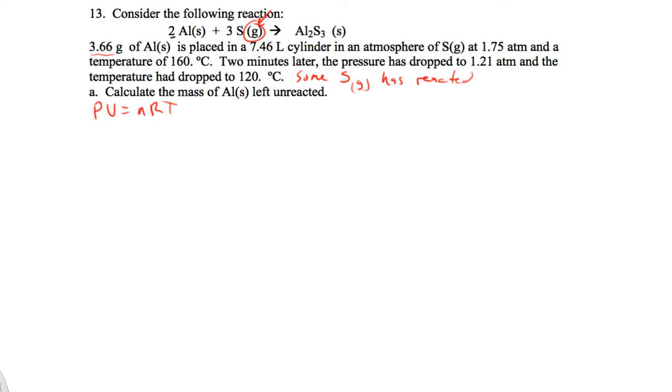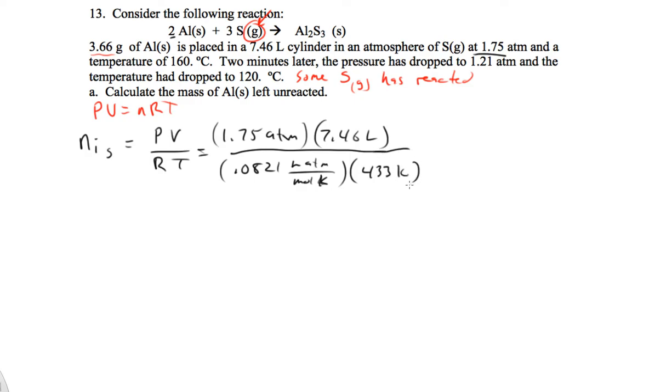So I want to figure out the initial moles of sulfur, because it doesn't say what the moles of sulfur are but it does give us the pressure, the volume, and we know R and T. That's going to be 1.75 atmospheres and the volume is 7.46 liters. Here's R, and then our temperature is 433 Kelvin.